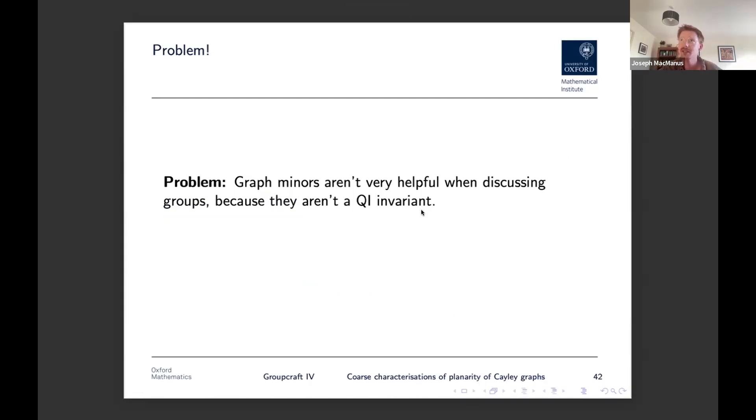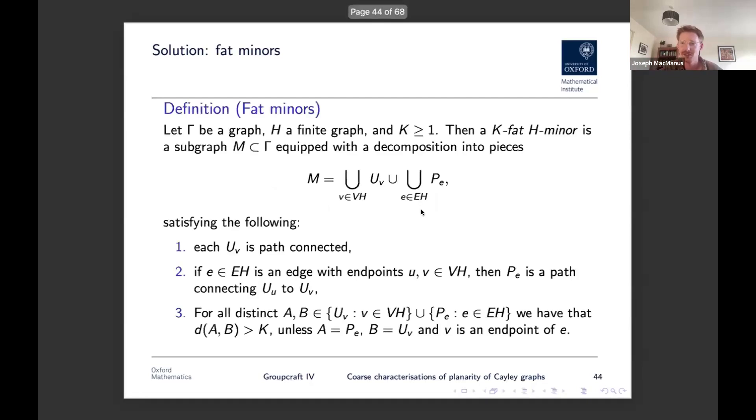So you have some graphs which are planar which are QI to graphs which are not even minor excluded. So it becomes very hard to make any meaningful deductions beyond what's already been said. But this has been a topic of some discussion recently and popularized is this idea of fat minors. So rather than just looking at minors in a Cayley graph, we look at the fat minors in our Cayley graph. So I'll give you the definition and I'll try and give you some intuition. But let's take a graph gamma and a finite graph H and some constant K, which is like a coarseness constant. And then, this definition looks like a lot to digest, but I promise you it's quite intuitive.